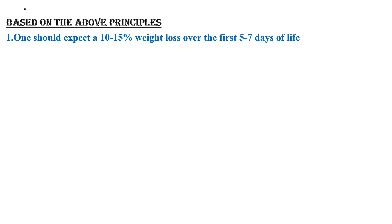Based on the above principles, one should expect a 10–15% weight loss over the first 5–7 days of life. This is due to loss of a large amount of extracellular fluid by urine, and that is why after birth there is intracellular fluid dominance compared to extracellular fluid dominance in utero. Weight loss is mainly due to higher rates of fluid loss from the extracellular space, and also during the first few days of life there is decreased nutritional intake.